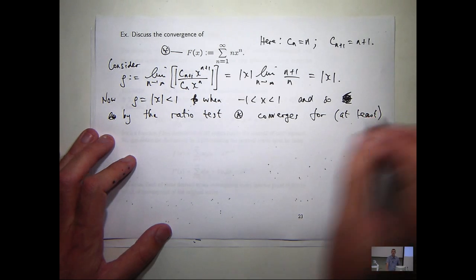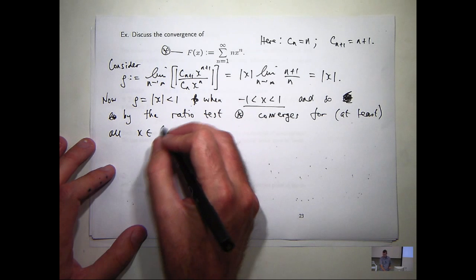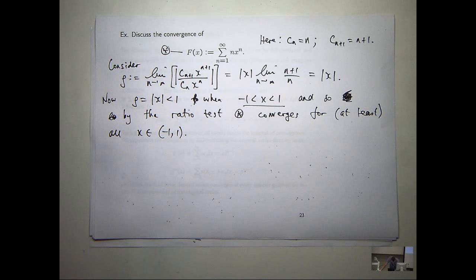So we know that we have convergence for at least the open interval minus 1 to positive 1. So what's our radius of convergence then? If that's our interval, what's our radius of convergence? 1, right?